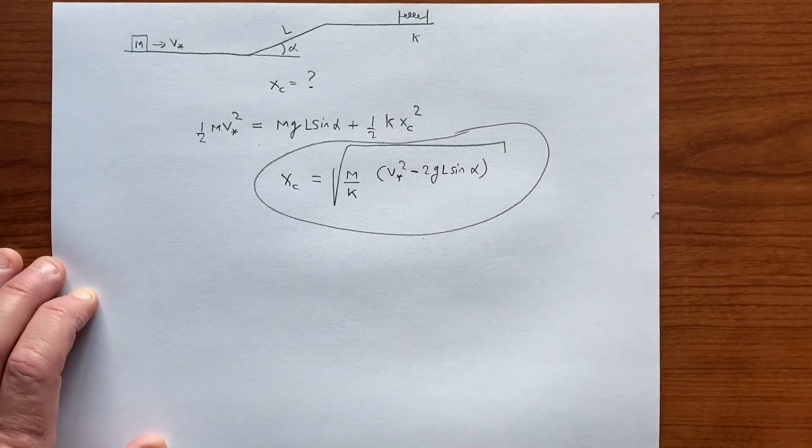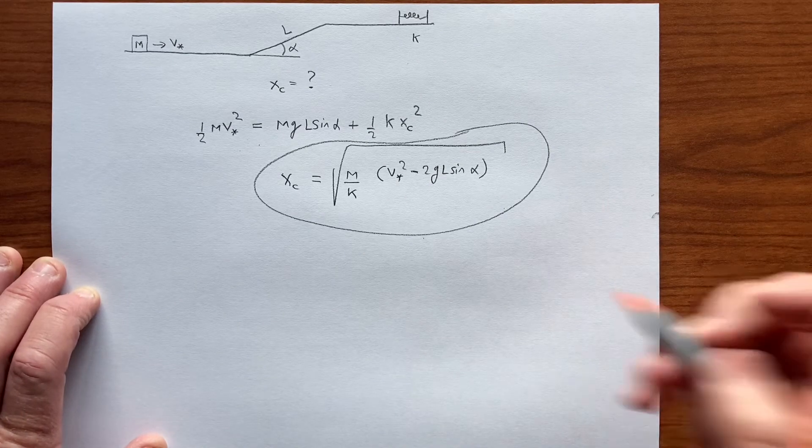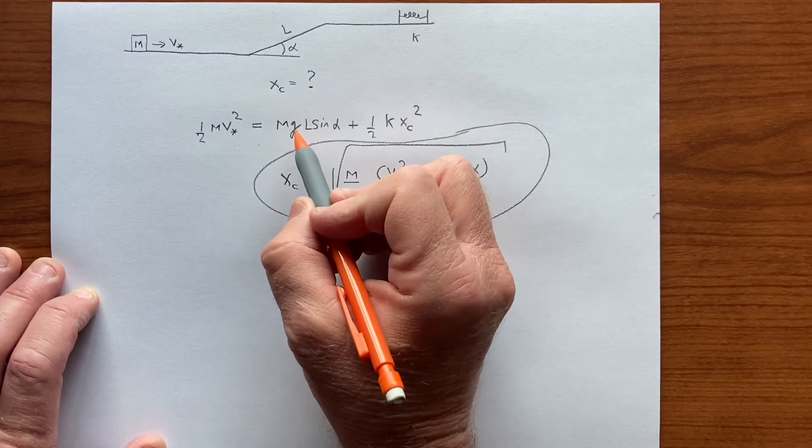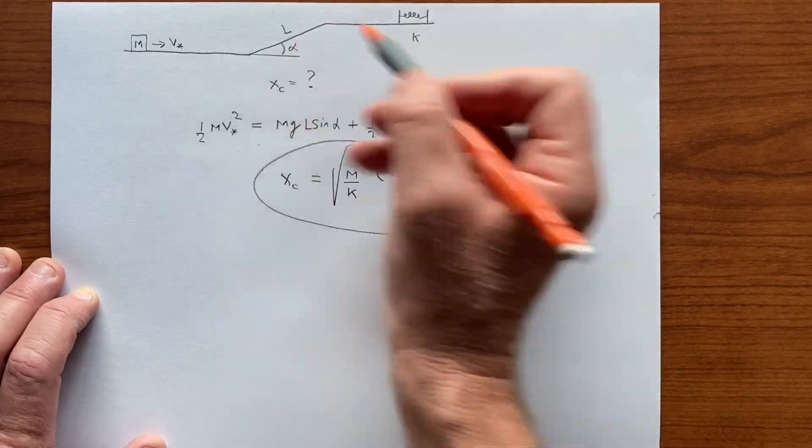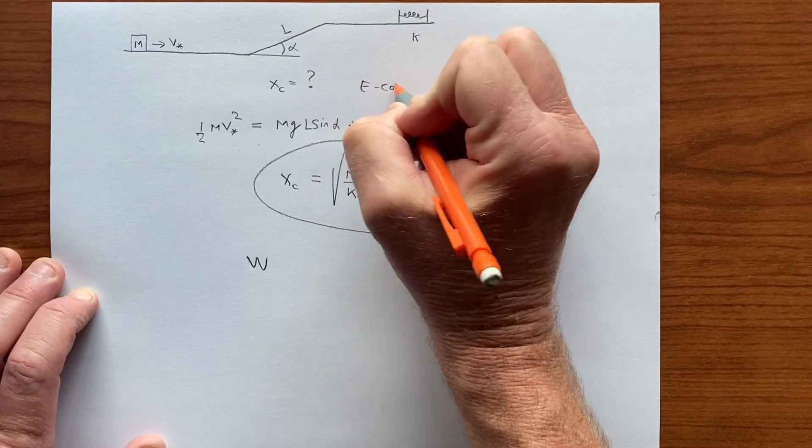And that's the maximum spring compression. If we think of this in terms of the work, then there's negative work done by gravity and negative work done by the spring. So from the perspective, this is energy conservation.